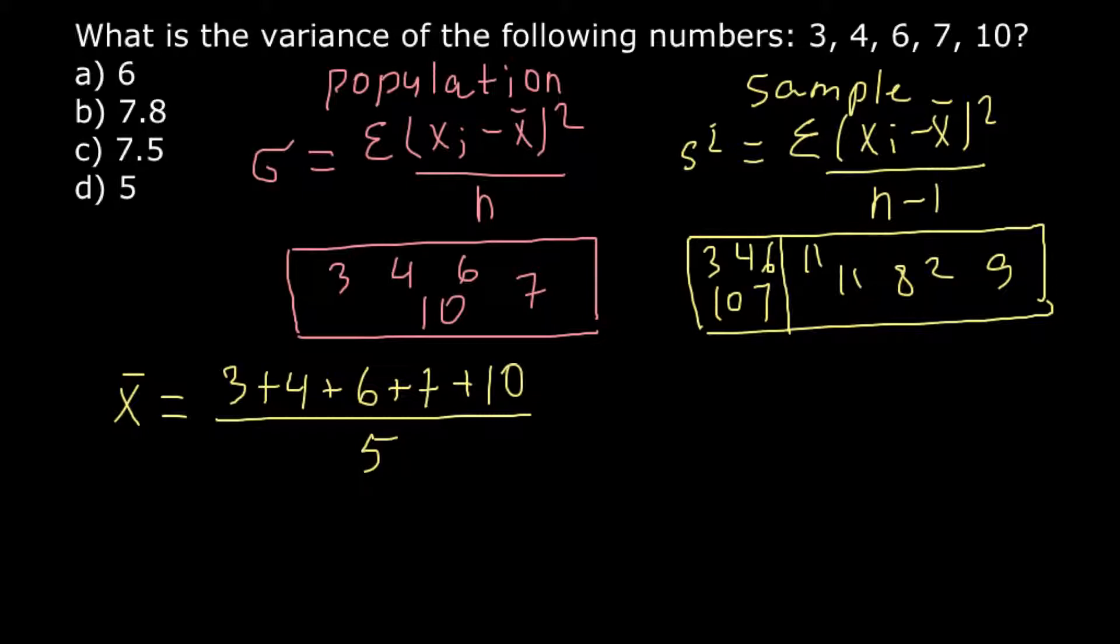It is 5. And here we have 3 plus 4 is 7, plus 6 is 13, plus 7 is 20, and 30 divided by 5. 30 divided by 5 gives us a mean of these numbers: 6.